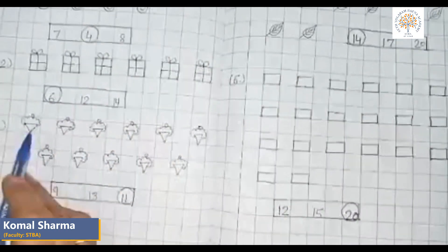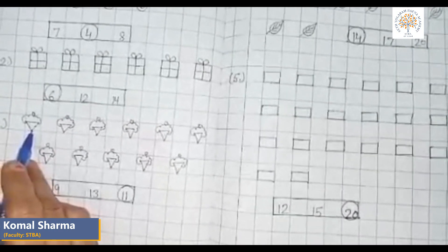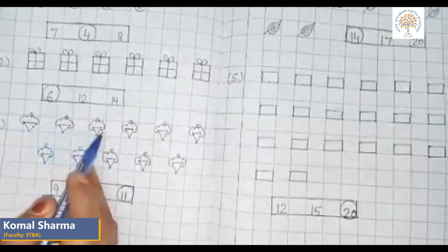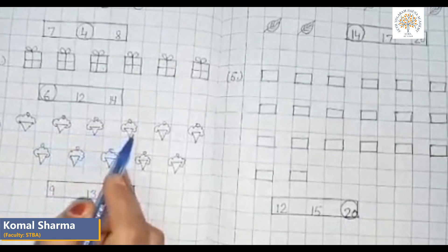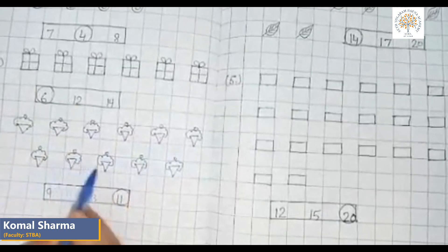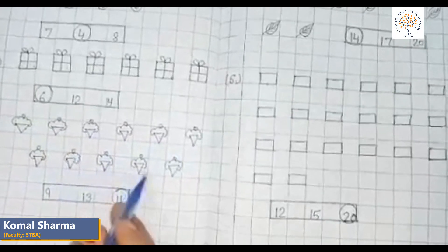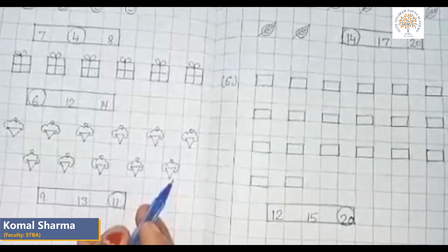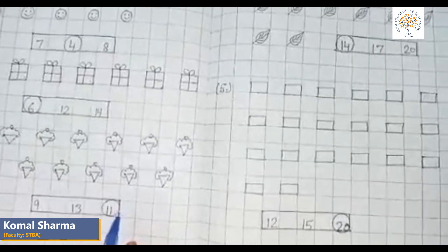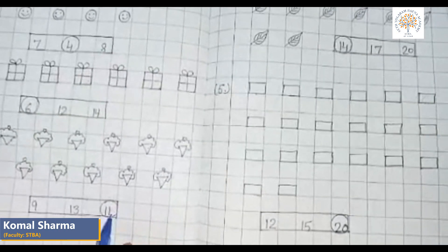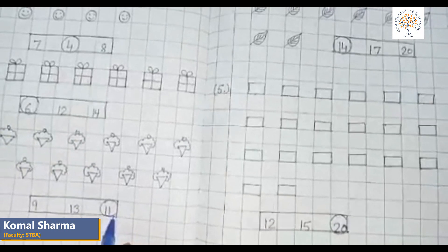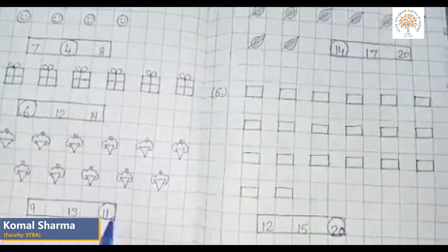How many ice cream cones are there? One, two, three, four, five, six, seven, eight, nine, ten, eleven. There are eleven ice cream cones. So we will circle the number eleven.